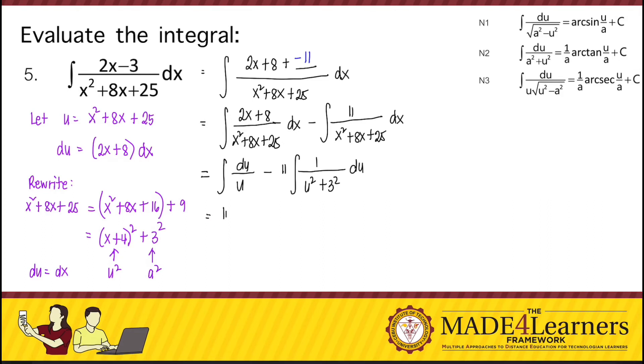So this is ln of u minus 11 times, following this formula, that's 1 over 3. Or that's ln, for the first integral, our u is x squared plus 8x plus 25 minus 11 over 3, arctangent of u over a. For the second integral, our u is x plus 4, so that's x plus 4 over 3 plus C.